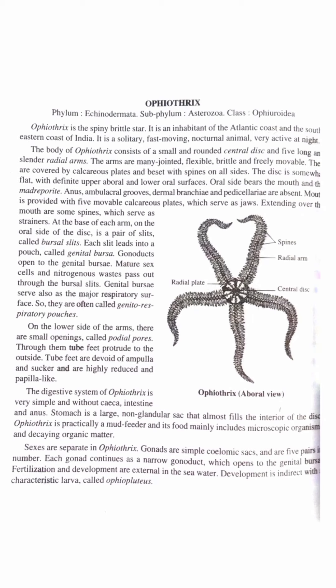The example of Ophiuroidea is Ophiothrix, the spiny brittle star. It is an inhabitant of the Atlantic coast and the southeastern coast of India. It is a solitary, fast-moving, nocturnal animal, very active at night. The body of Ophiothrix consists of a small rounded central disc and five long slender radial arms. The arms are many-jointed, flexible, brittle and freely movable, covered by calcareous plates and beset with spines on all sides.